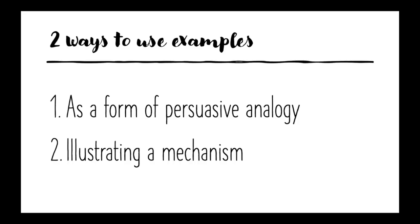Secondly, examples can also be used as a way of illustrating a mechanism. They can make your argument seem more fleshed out and concrete. For instance, in a motion about this house supports a UN Standing Army, teams might be sent into theoretical discussions of whether a Standing Army or UN peacekeepers are a better actor. If Proposition were to raise the example of Rwanda, where peacekeepers were wholly inadequate and the Standing Army could have helped stop the genocide, it would put Proposition in a better position to win the debate as their arguments seem to have much more impact in the real world.